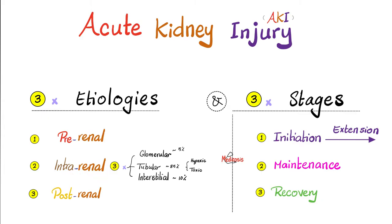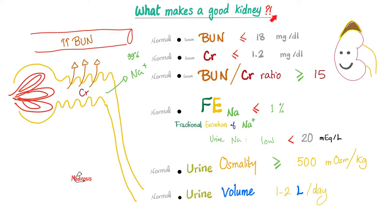Intrarenal causes include problems in the glomerulus, tubule, or interstitium, and sometimes the renal vessels. Tubular disease is either hypoxic (not enough blood supply) or toxic — caused by a drug, heavy metal, or radiocontrast dye. The three stages of AKI are initiation, maintenance, and recovery.